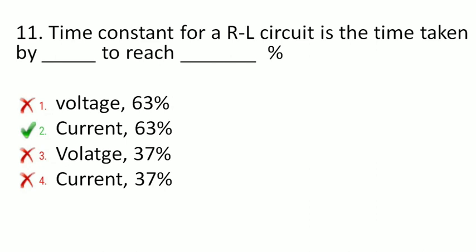Next is: the time constant for an RL circuit is the time taken by what to reach what percent? The options are voltage to 63%, current to 63%, voltage to 37%, or current to 37%. The correct answer is: the time constant for an RL circuit is the time taken by the current to reach 63% of its final value.